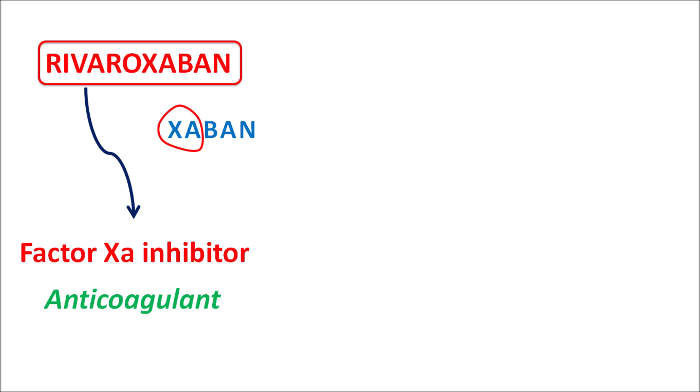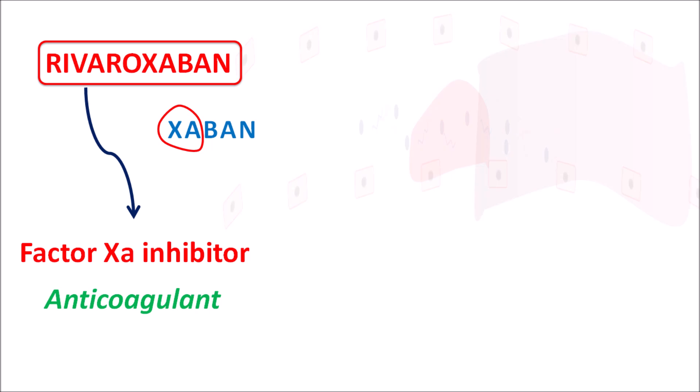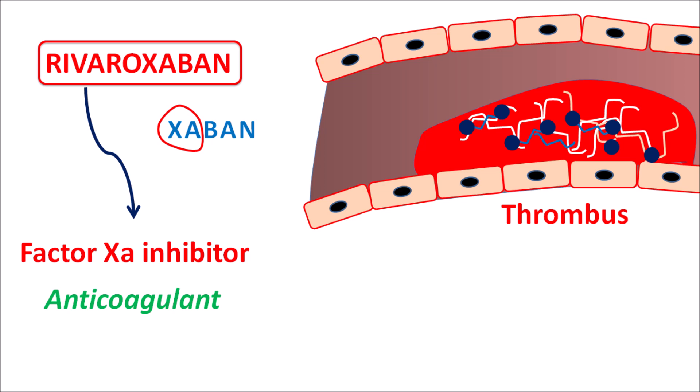That's why rivaroxaban can be used in conditions where there is formation of an abnormal clot, called a thrombus. This thrombus is rich in platelets, coagulation factors, and lipids like cholesterol, and this drug can reduce thrombus formation by inhibiting clot formation. Normally this thrombus is highly pathological — when it fragments it can block blood vessels, resulting in systemic embolism.